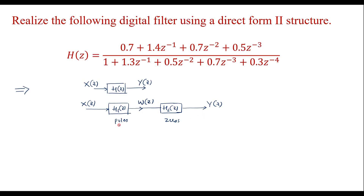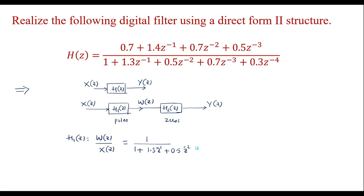Zeros correspond to the numerator and poles correspond to the denominator. I can write H1 of Z as output W(Z) divided by input X(Z), which is equal to 1 upon (1 + 1.3 Z⁻¹ + 0.5 Z⁻² + 0.7 Z⁻³ + 0.3 Z⁻⁴), since H1 of Z is with respect to poles, meaning the denominator.